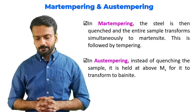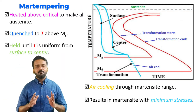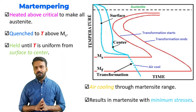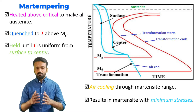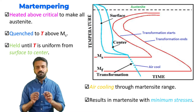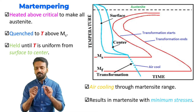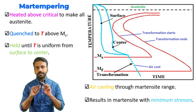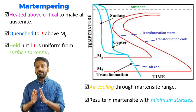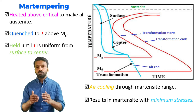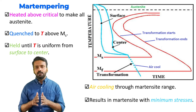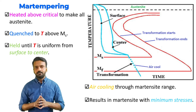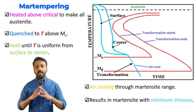This is the cooling curve for martempering. We can see that the material is cooled just above the martensitic start transformation temperature and held there so that the entire material — both surface and center — becomes homogeneous. Then air cooling is carried out, forming the martensitic structure, and the resulting martensite has minimum internal stresses.